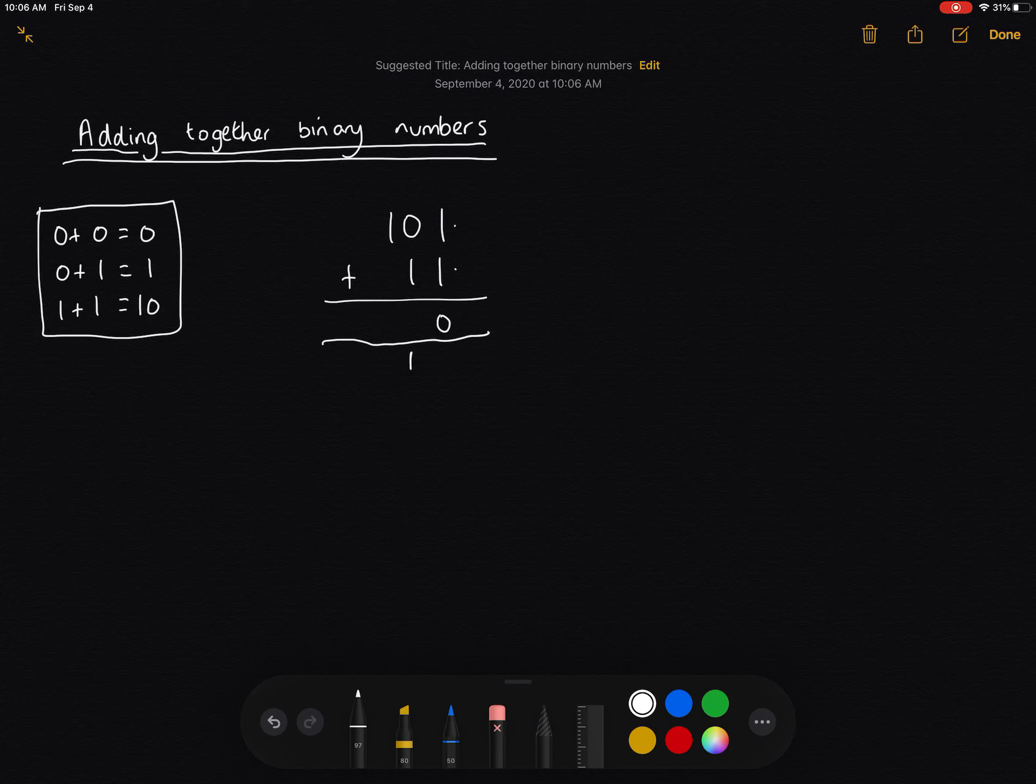Okay, so if we look at the second column now, we're going to add 0 and 1, which is going to give us 1. We need to add our carry bit, which is going to put us at 1, 0. So we're going to write down the 0 and carry the 1.